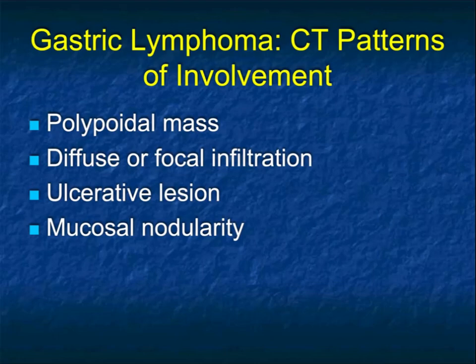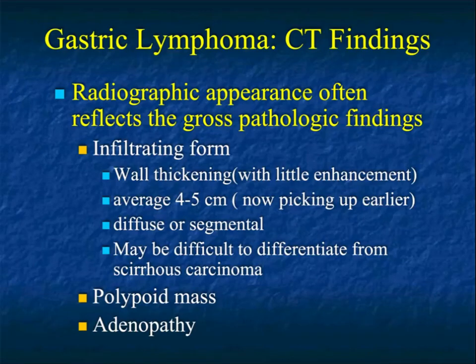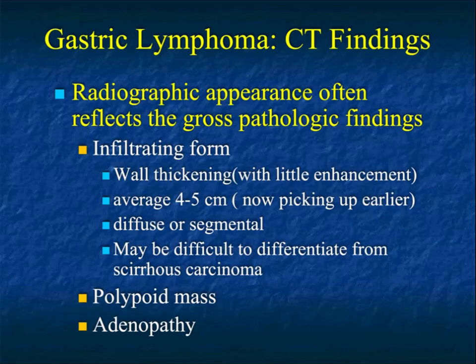When we think about gastric lymphoma, there are CT patterns from a polypoid mass to diffuse infiltration to ulcerative lesions to mucosal nodularity. In the old days, we used to separate gastric adenocarcinoma from lymphoma by saying that if a mass was over 5 cm it was lymphoma. But now with CT, we pick up things much earlier, and the overlap — particularly early — between lymphoma and gastric adenocarcinoma is high.